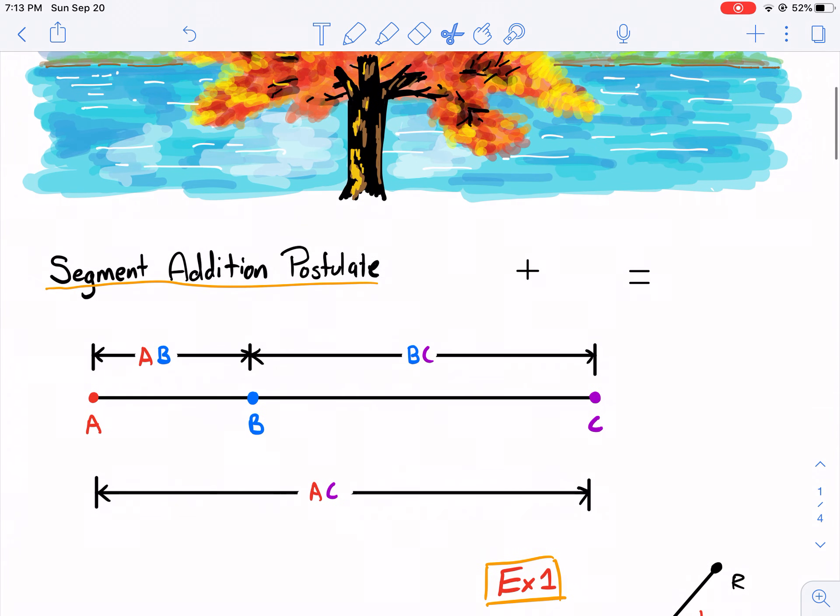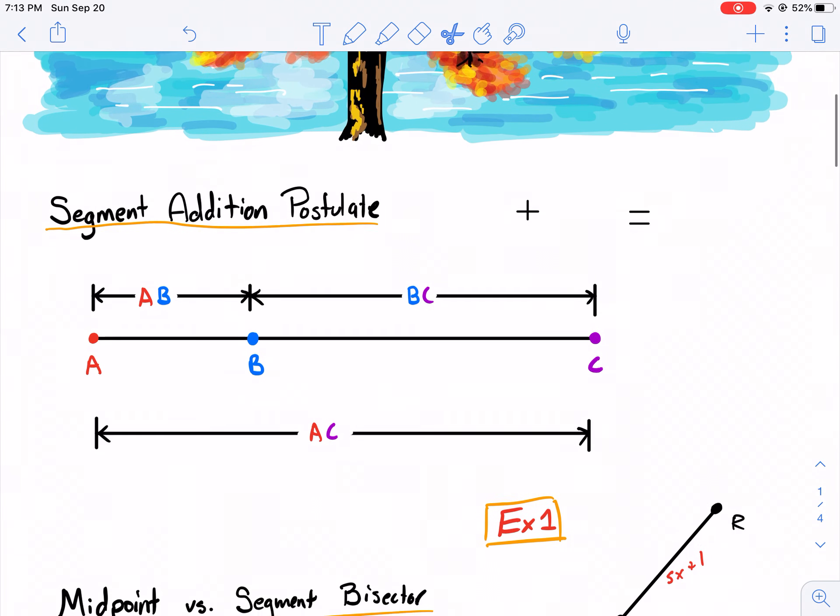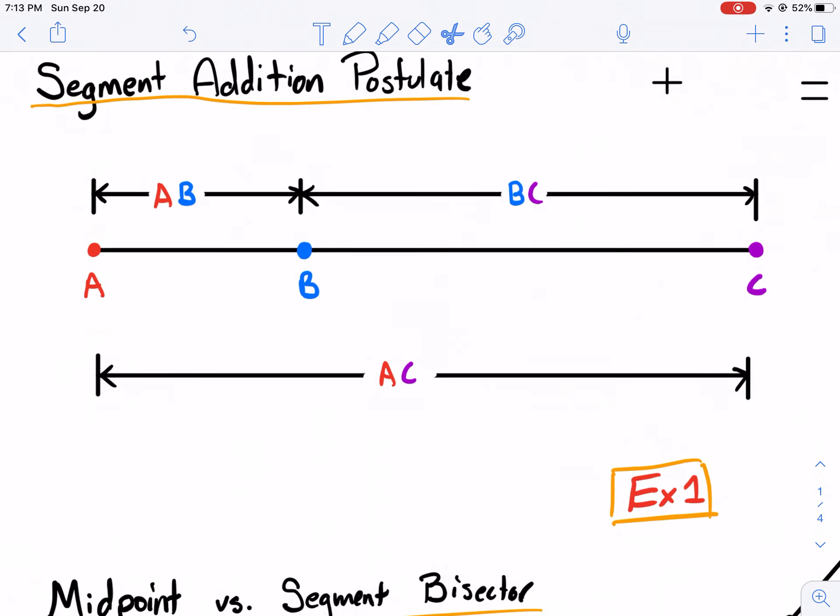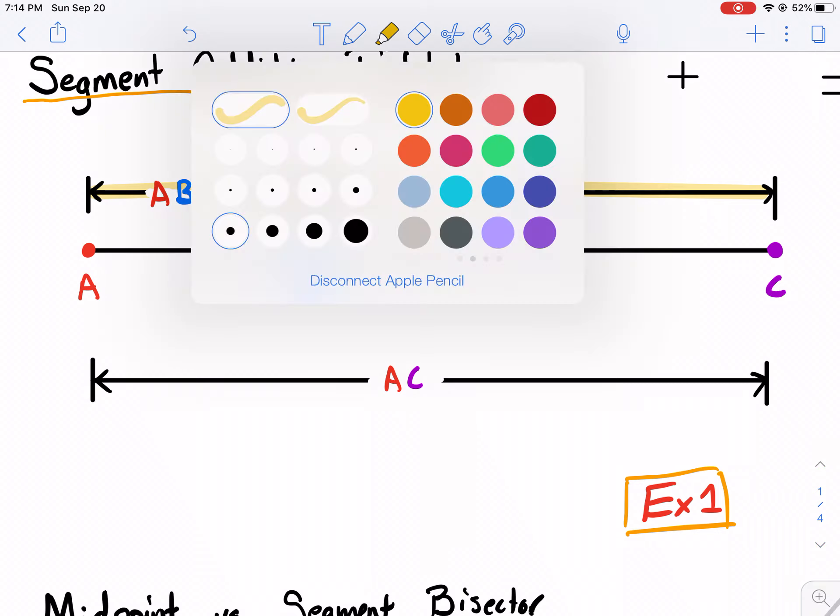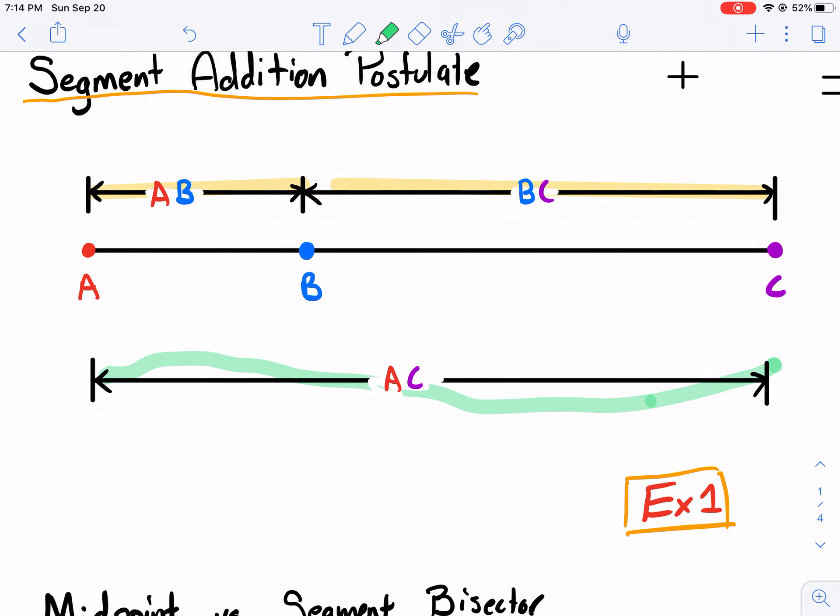Here we have the segment addition postulate. What does that mean? Well, let's break it down into this little diagram here. We have this line segment. It's a line segment because it has endpoints A and it has an endpoint C, and it's got another point B in the middle.